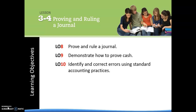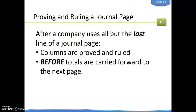Here is our last lesson in Chapter 3, which is on proving and ruling our journals. We're going to talk about what proving and ruling is, how to prove cash and why we do that, and also how you may need to identify and correct errors using the appropriate accounting practices. So let's first talk about proving and ruling a journal page.